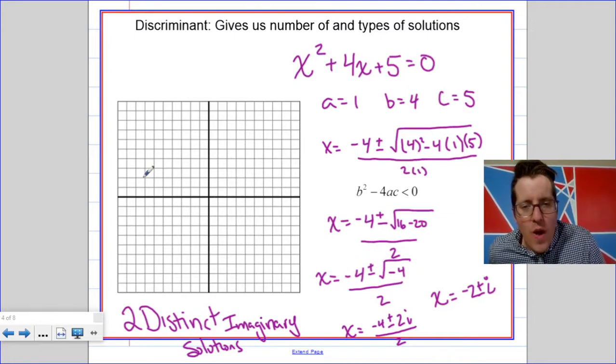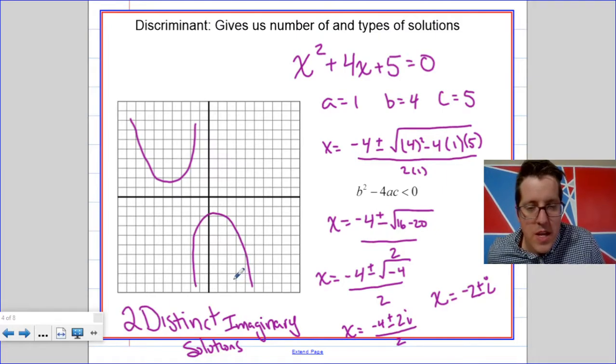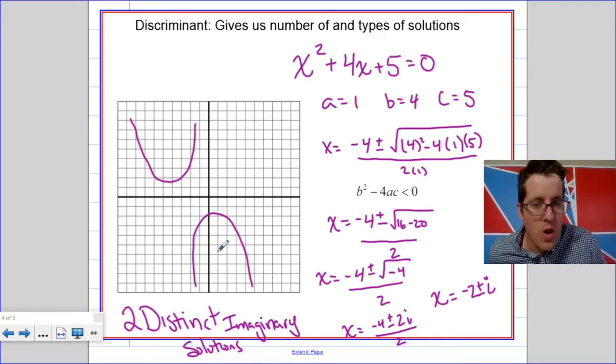When you graph things that have a negative discriminant, they are either going to not hit the x-axis from above, or not hit the x-axis from below. The reason they're not going to hit the x-axis is because they don't have a real solution. So, their solution won't show up on a graph, on a real coordinate plane.